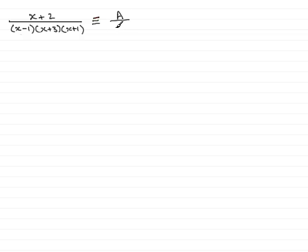So in the first case it will be a over x minus 1, plus another constant b over the next factor x plus 3, and finally another constant c over x plus 1. You can have any letters that you like, but most people tend to go for a, b, and c.